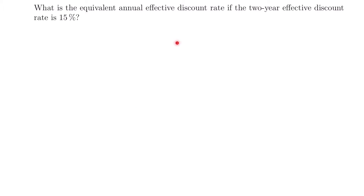Welcome back. Let's start with this example: what is the equivalent annual effective discount rate if the two-year effective discount rate is 15%? Here we're working with two different types of discount rates — an annual effective discount rate and a two-year effective discount rate. Let's write down what we know and then what we don't know.